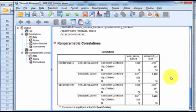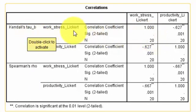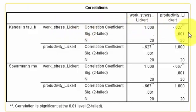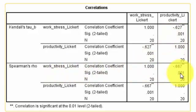Click OK and the output shows Kendall's correlation, which says there was a significant correlation. When work stress goes up, productivity goes down — it's negative and it is significant. And there's the Spearman's, which says the same thing. In fact it gives you a slightly stronger correlation, but the same conclusion: when work stress goes up, productivity goes down, and they are both significant.